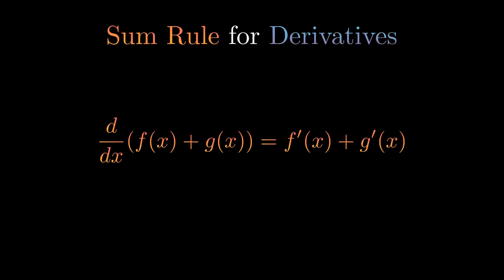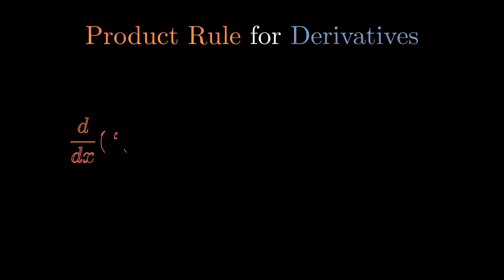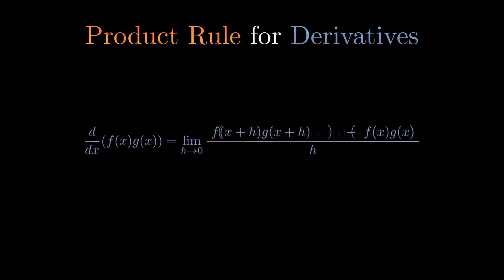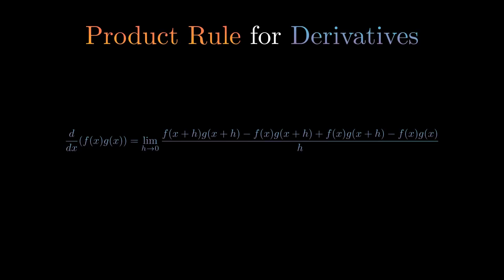Next up is the product rule. This proof is more important as the answer doesn't seem that very intuitive. The proof is a little longer and is a little bit more tedious. Like before, we first plug it into the definition. This time we have to add and subtract a special term: f(x) times g(x + h).